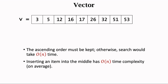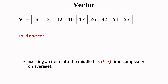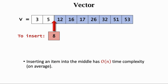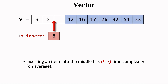To maintain the ascending order, an insertion takes O(n) time on average. We want to insert the new element 8 into the vector at the position where 8 should be placed, so the ascending order is preserved. We need to make room for the new element by moving those elements one step right to create a vacant cell. On average, half of the elements are moved, so the average time complexity is O(n). The insertion is therefore slow.